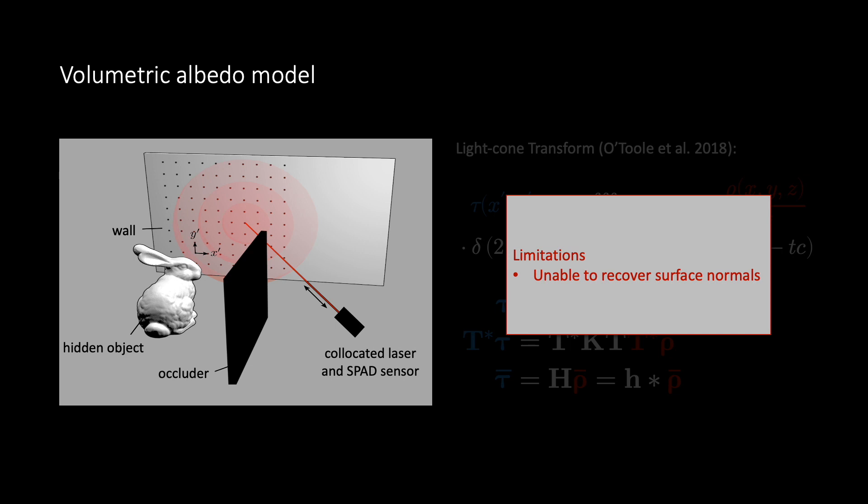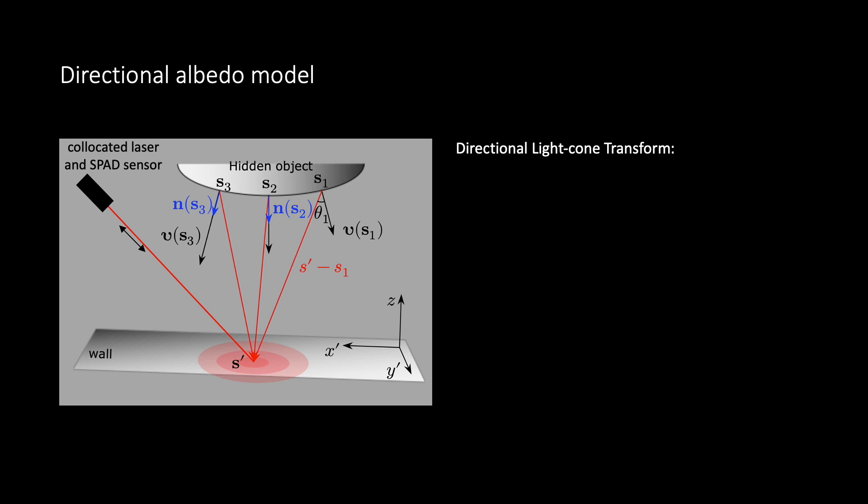In this work, we propose the directional albedo model, which can be inverted efficiently to recover the required surface normals. We introduce surface normals into our model using Lambert's cosine terms. Now, the same location x'y' on the wall at time t captures albedo scaled normal vectors projected onto the light path from scene locations which are half t light seconds away. We refer to these albedo scaled normal vectors as directional albedo.